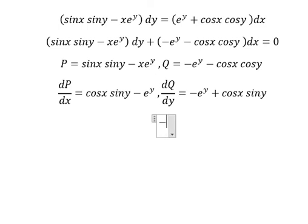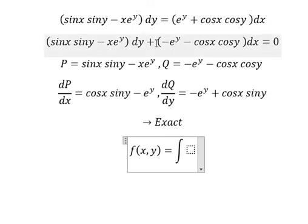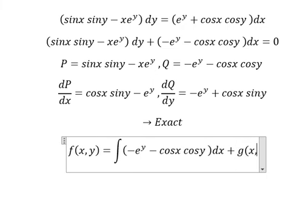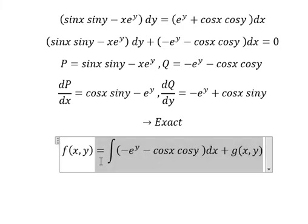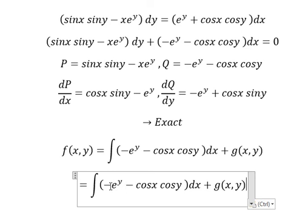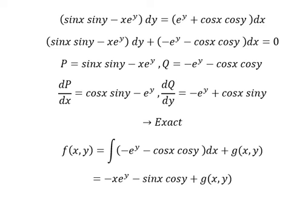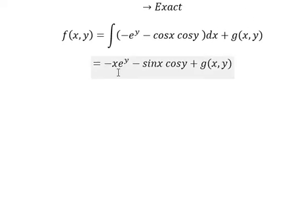Now we need to set up the function f(x,y) equals the integration of Q with respect to x plus g(x,y). The integration of negative e^y minus cosx cosy gives negative xe^y minus sinx cosy plus g(x,y). Next we need to find the partial derivative of f with respect to y.